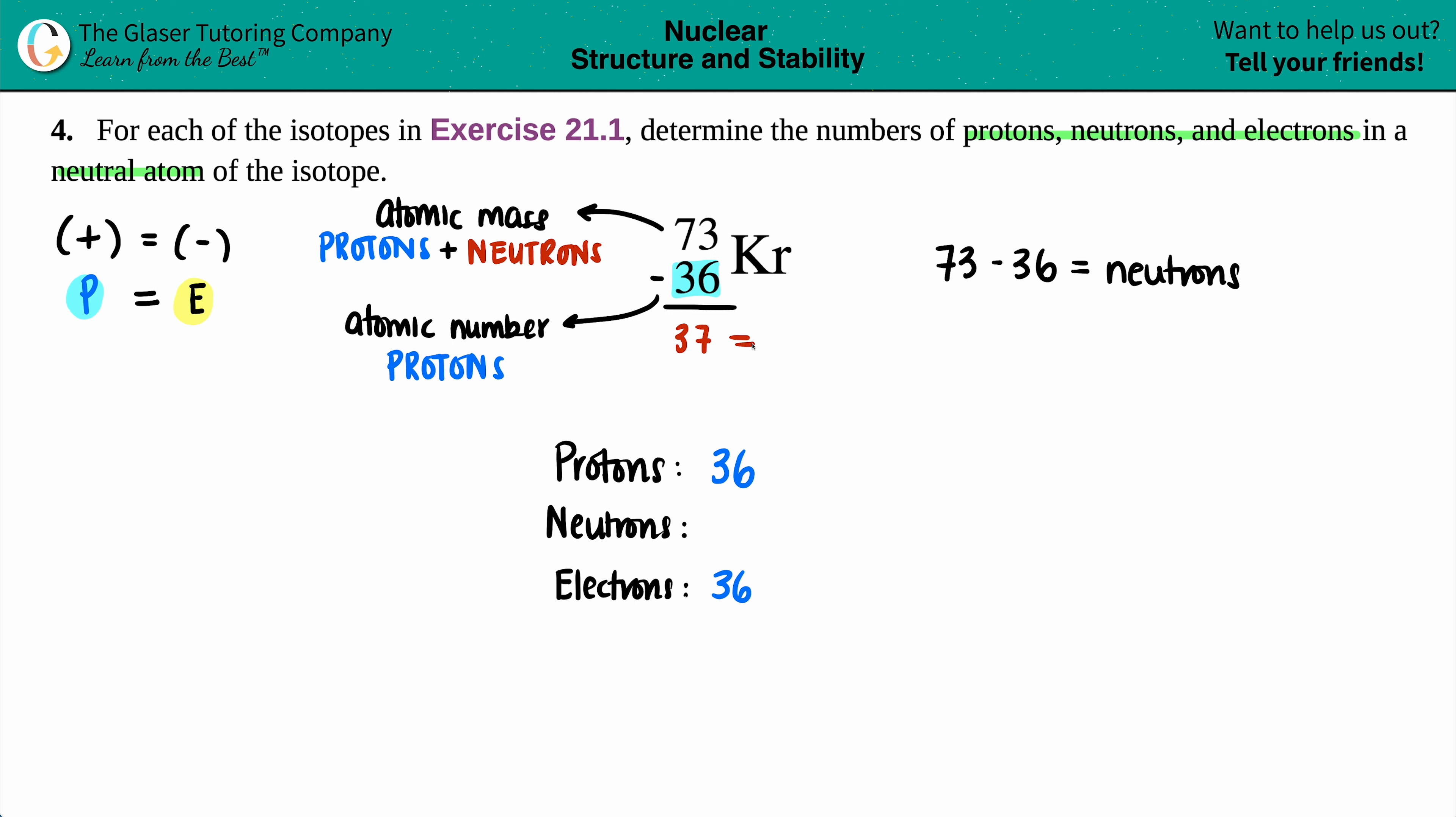37 is the number of neutrons. And that is the final answer. So we have 36 protons and 36 electrons because it's neutral, and then from the numbers that they gave us, we have 37 neutrons, and that's it.